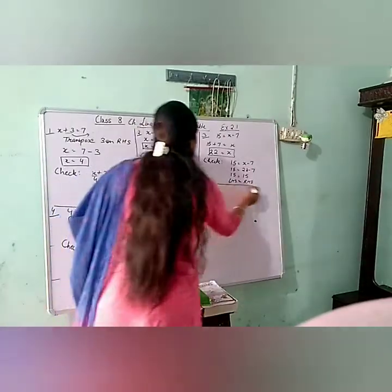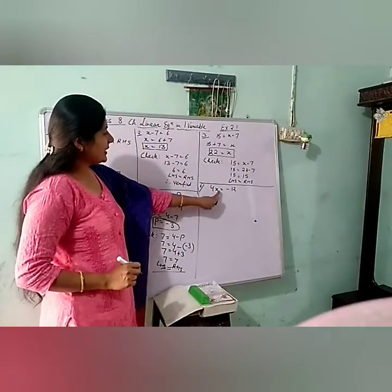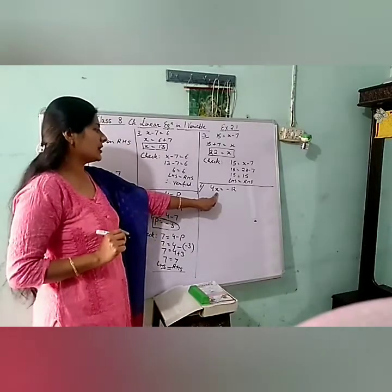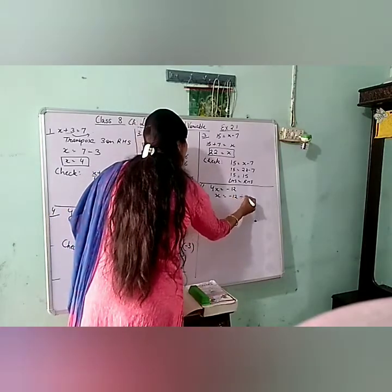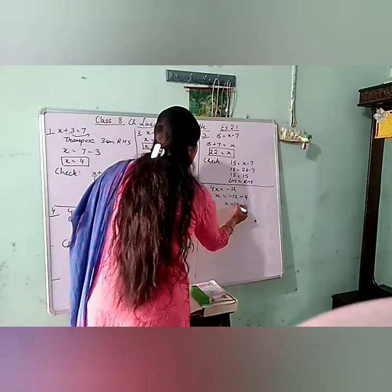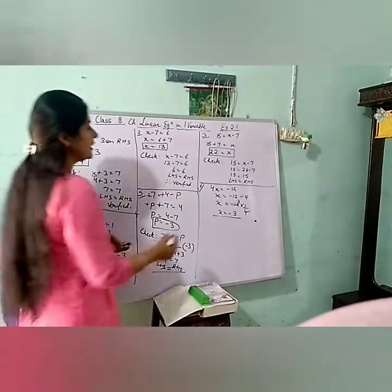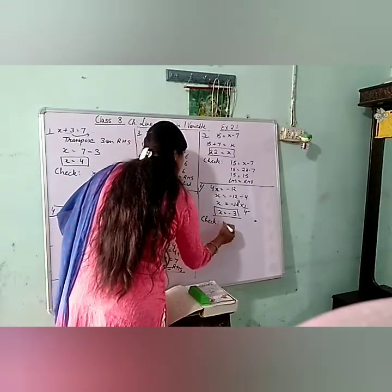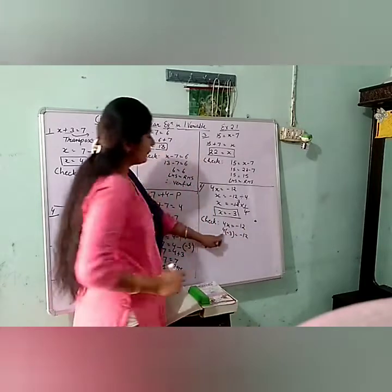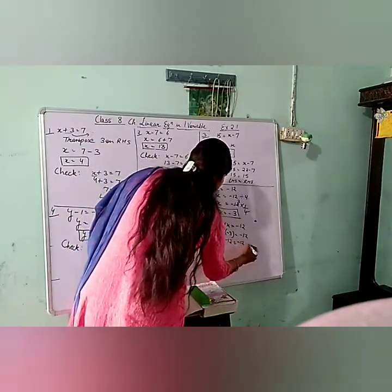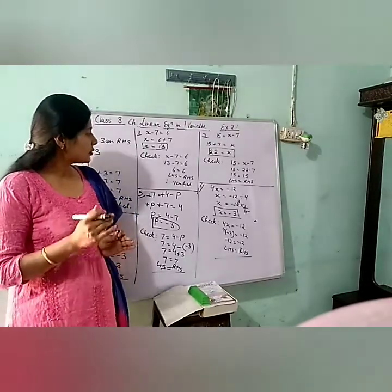Moving to the 6th part: 4x is equal to minus 12. The 4 is multiplied with x, so transposing it goes to the denominator — divide. x equals minus 12 divided by 4, that is x equals minus 3. Checking: substituting x as minus 3, 4 times minus 3 equals minus 12, and right hand side is also minus 12 — therefore LHS equals RHS, hence verified.